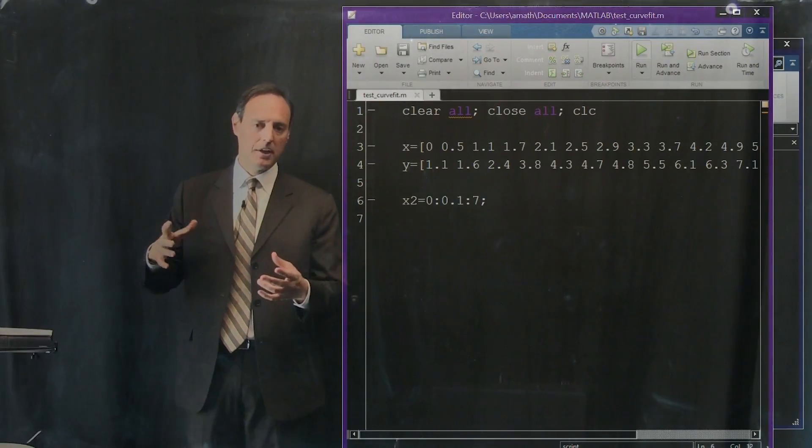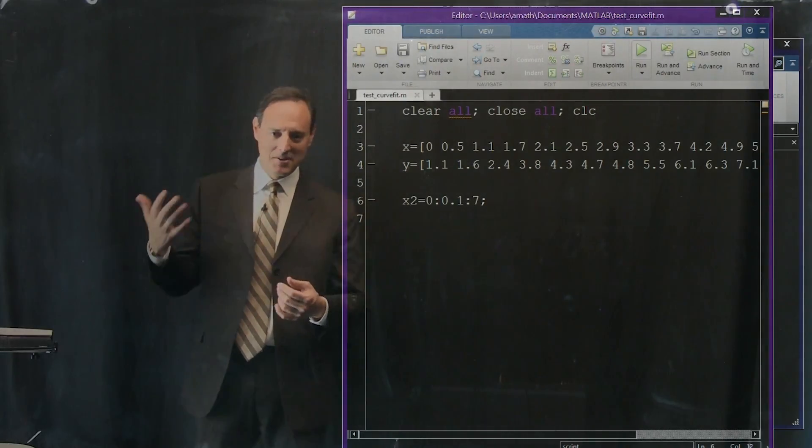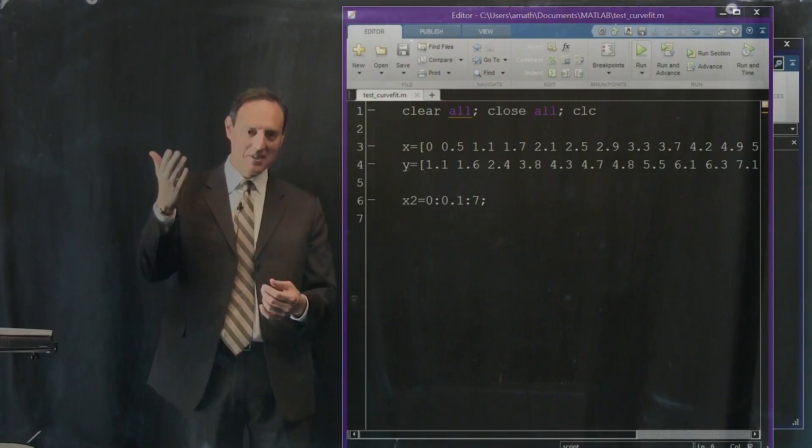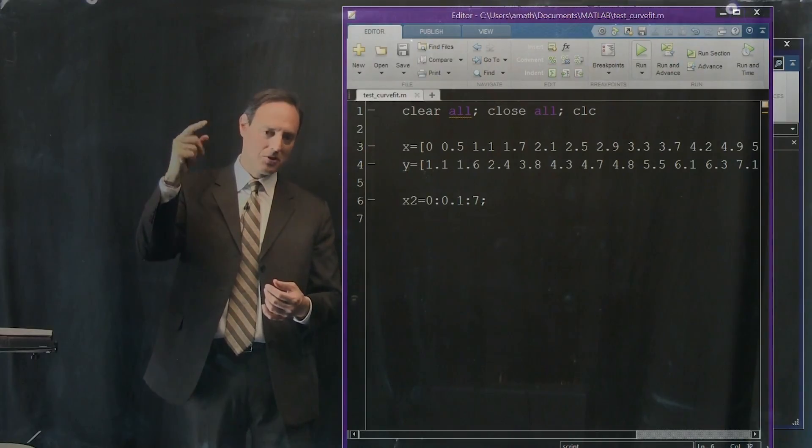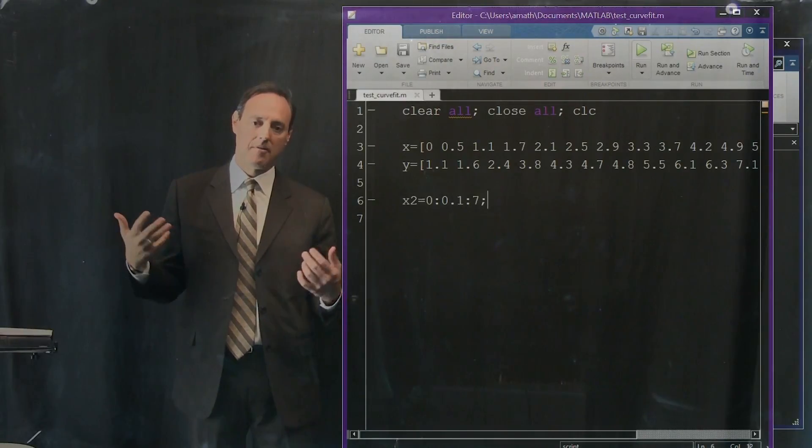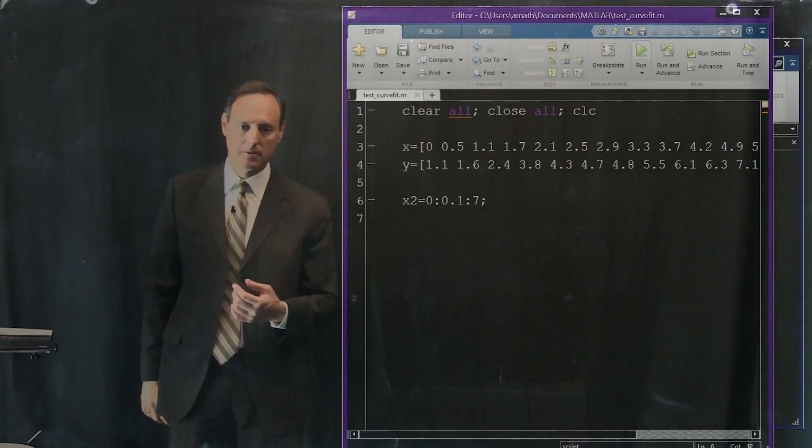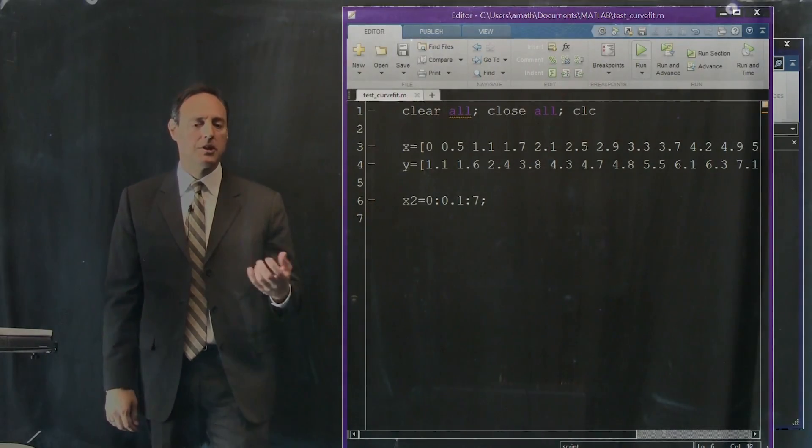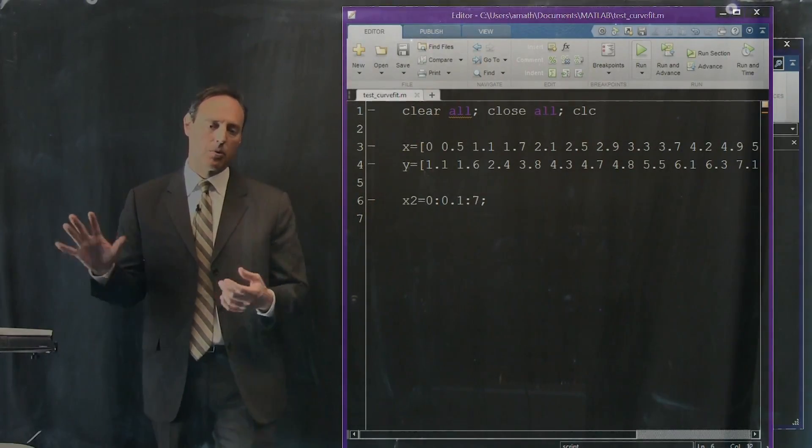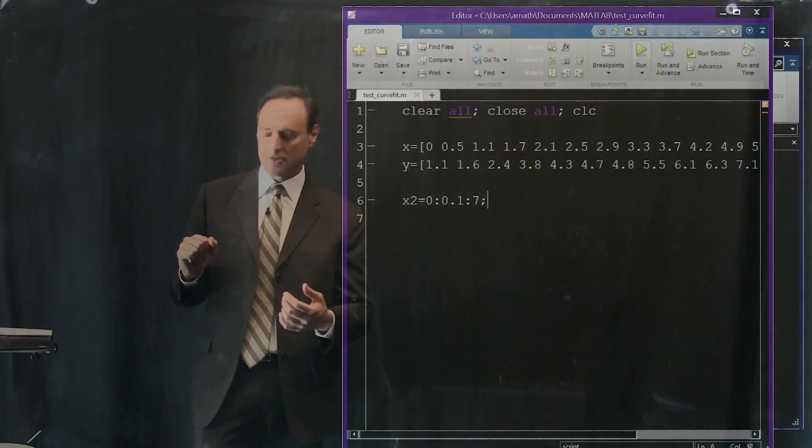So it used to be in the old days, you'd have these lookup tables for values of logarithms and sign functions, and you'd look up on the table where it is. But oftentimes, the scaling of how finely cut those values were would have a finite extent, and so you'd have to fill in the missing values by interpolation. So interpolation is an important task, and it's even an important task for the computer as you train your computer to do lookup table tasks.